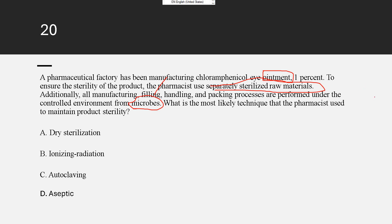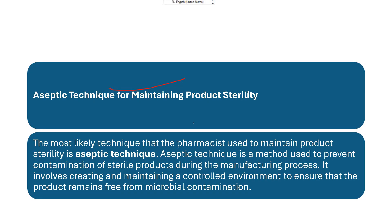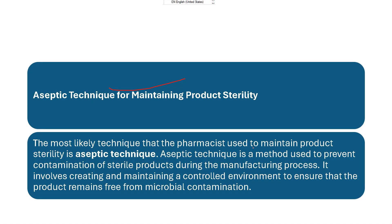What is the most likely technique that pharmaceutical pharmacists use to maintain product sterility? A: dry sterilization, B: ionizing radiation, C: autoclaving, D: aseptic technique. Aseptic technique is the method used to prevent contamination of a sterile product during the manufacturing process, involving creating and maintaining a controlled environment to ensure the product remains free from microbial contamination.